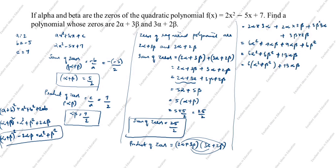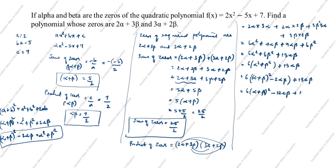Substituting the formula, the product becomes: 6[(α + β)² - 2αβ] + 13αβ. Expanding inside the bracket: 6(α + β)² - 12αβ + 13αβ. Since 13 is greater than 12, we get a positive result: 6(α + β)² + 1·αβ.